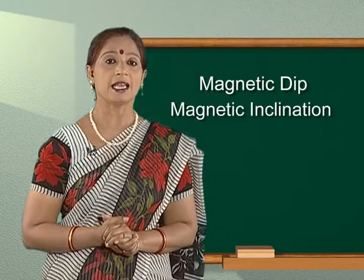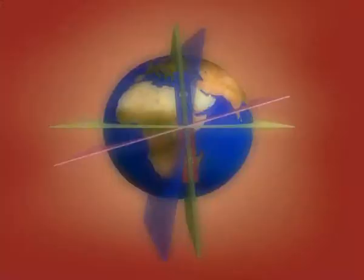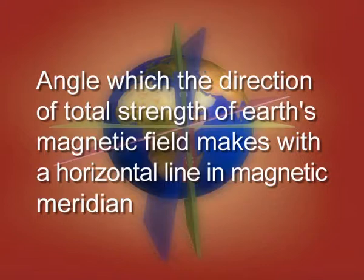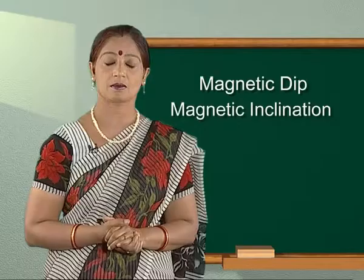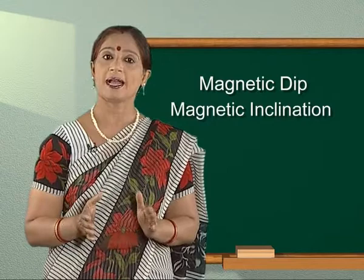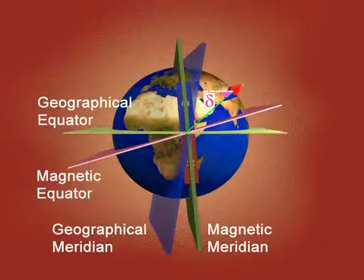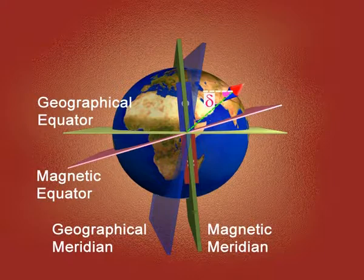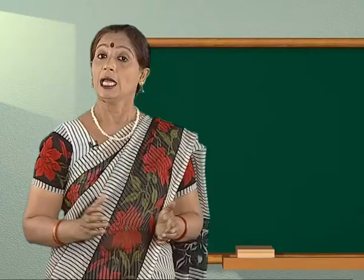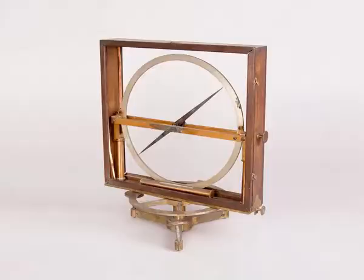Magnetic dip or magnetic inclination at a place can be defined as the angle which the direction of total strength of Earth's magnetic field makes with a horizontal line in a magnetic meridian. It is the angle by which the total intensity of Earth's magnetic field dips or comes out of the horizontal plane. It is represented by delta and is measured with the help of a dip circle.